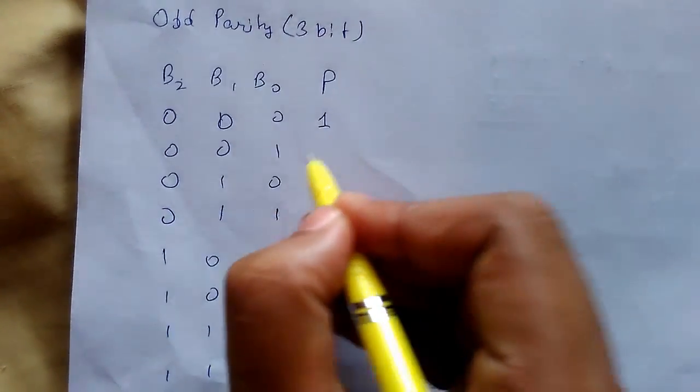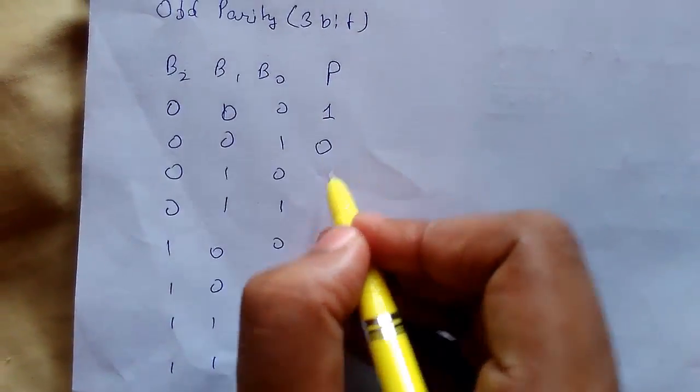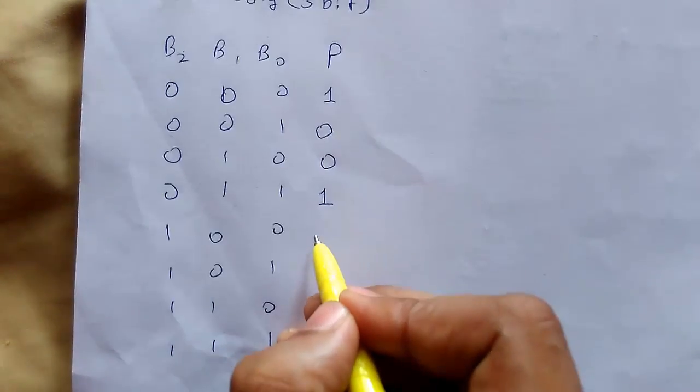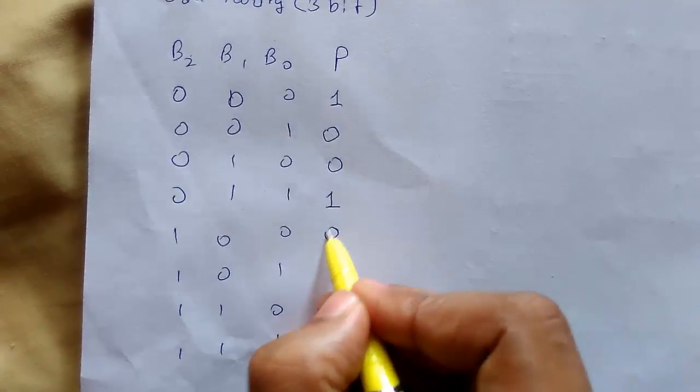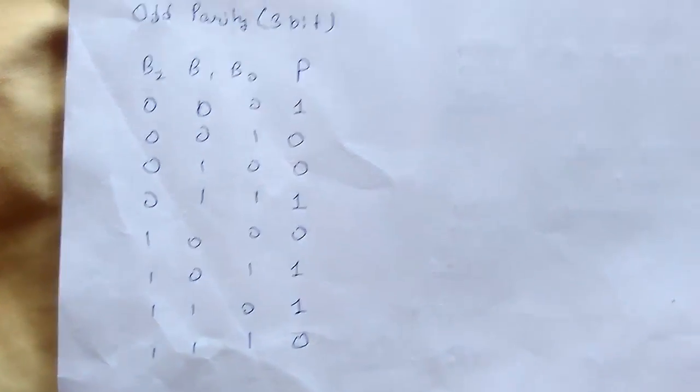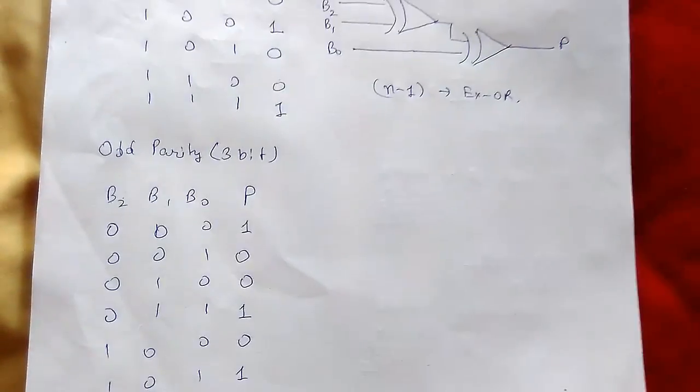To make the count odd, the first parity bit will be 1. For the next row with one 1, it will be 0 to keep it odd. We continue: 0, 1, 0, 1, 1, and 0. We can see that the results are totally opposite to the even parity truth table.